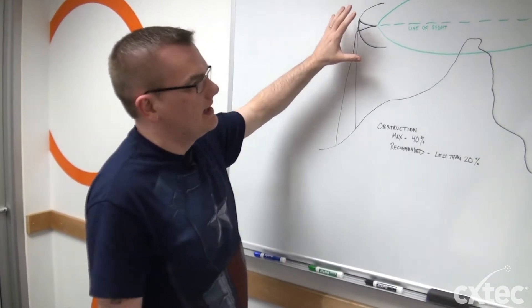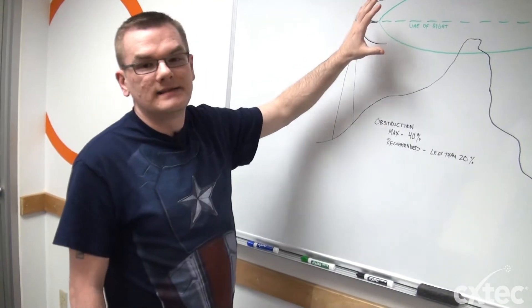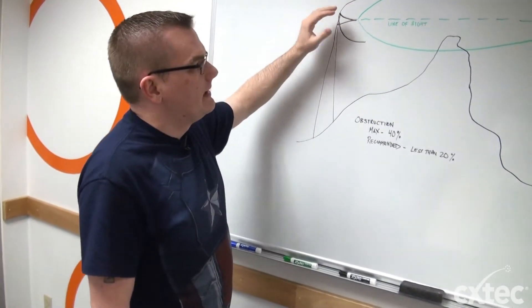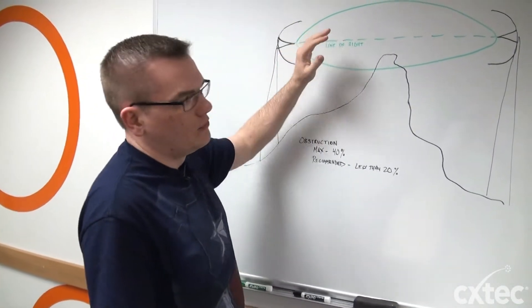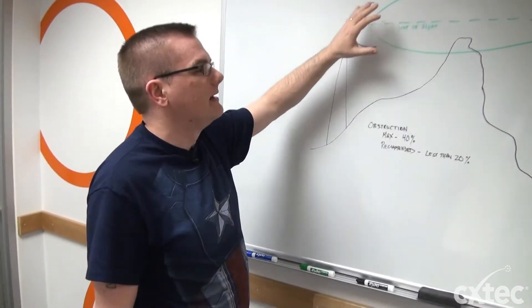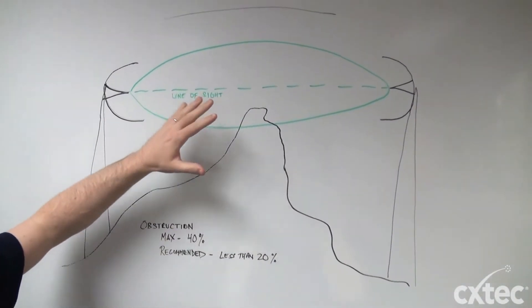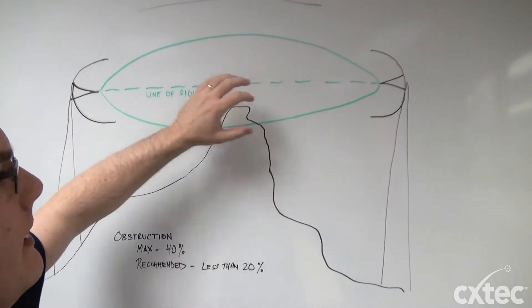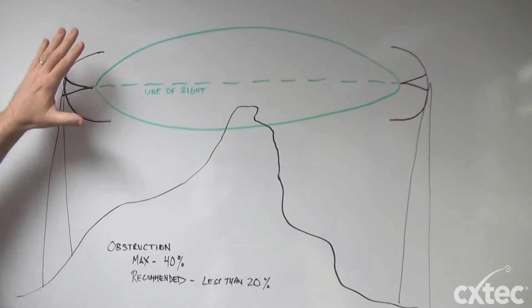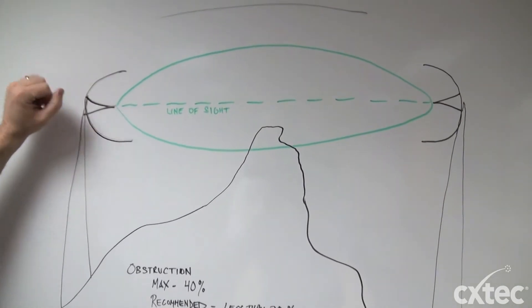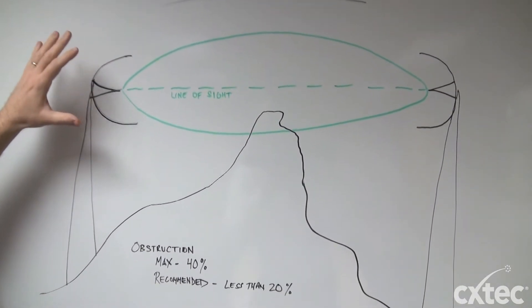Essentially when you have two antennas bridging a distance, they will communicate line of sight. The radio waves will travel point A to point B in a straight line. However, along that transmission, the further they are apart, those signals will widen.